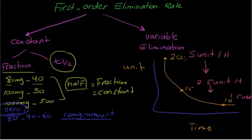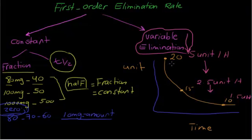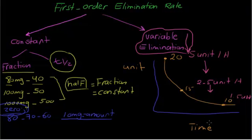So the elimination rate will decrease as the dose of the drug decreases in the body. When you give a patient 20 units of the drug, the elimination rate is 5 units per hour. After, say, 5 hours, the drug level in the blood is 15, and at 15 the elimination rate is 2.5 units per hour. After another 5 hours, the drug reaches its lowest level of 10, and the elimination rate becomes 1.5 units per hour. So the elimination rate changes and decreases as the drug level in the blood decreases over time.